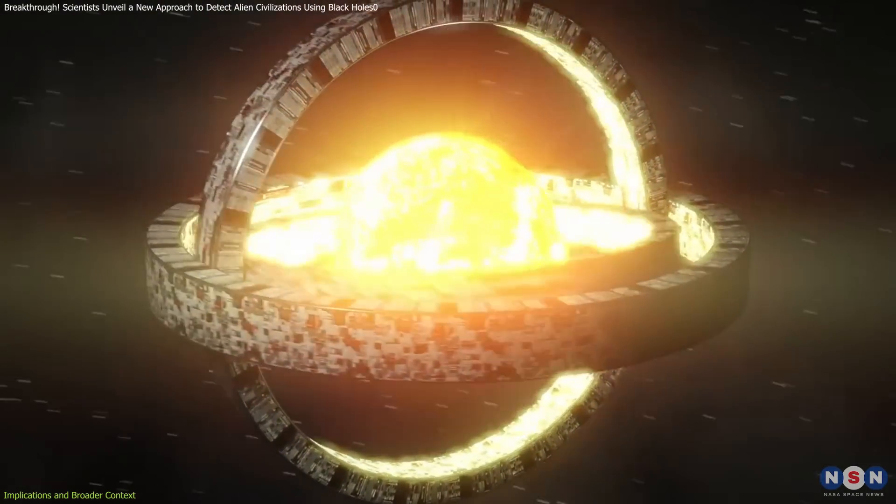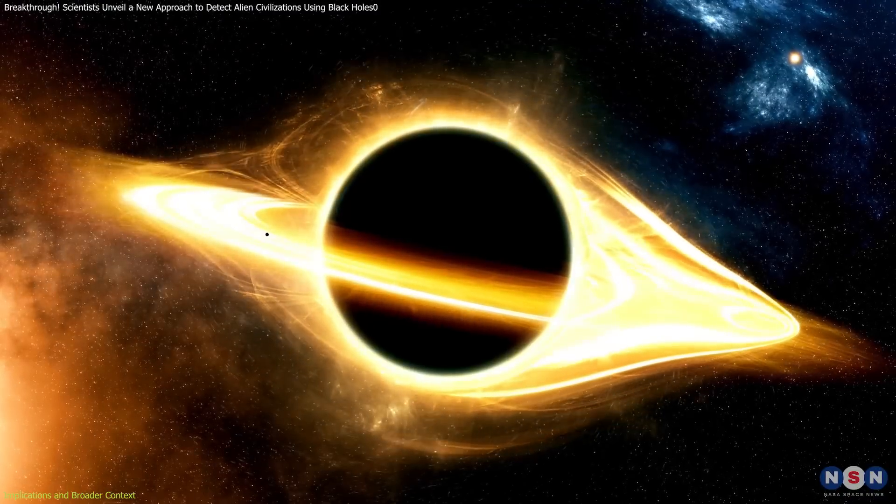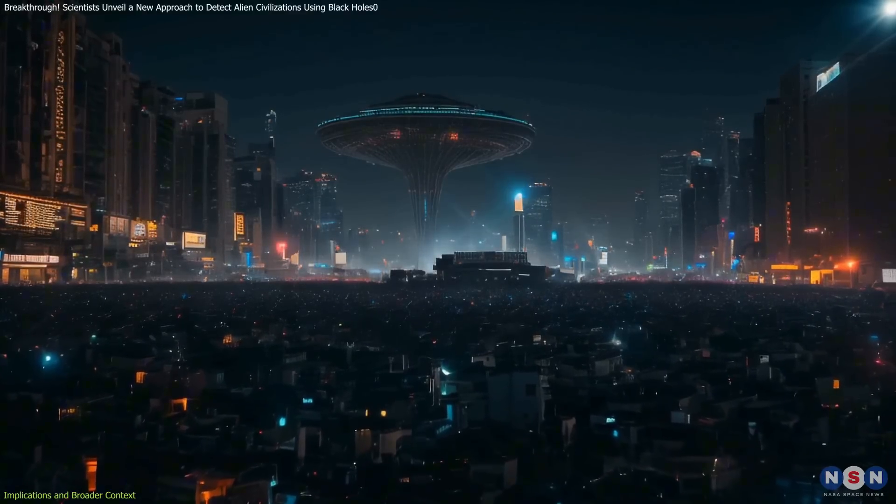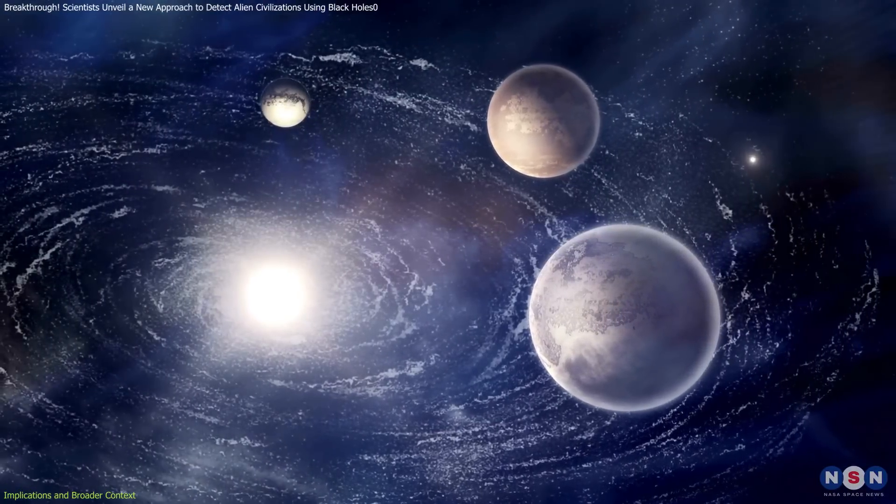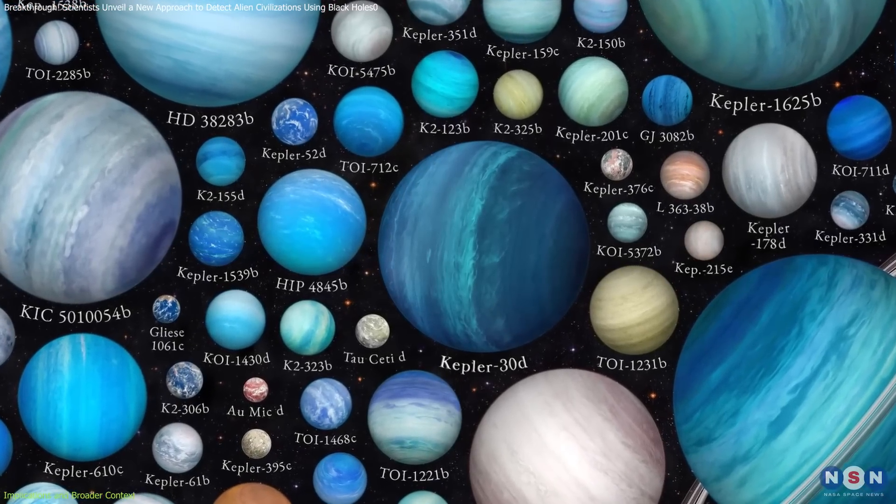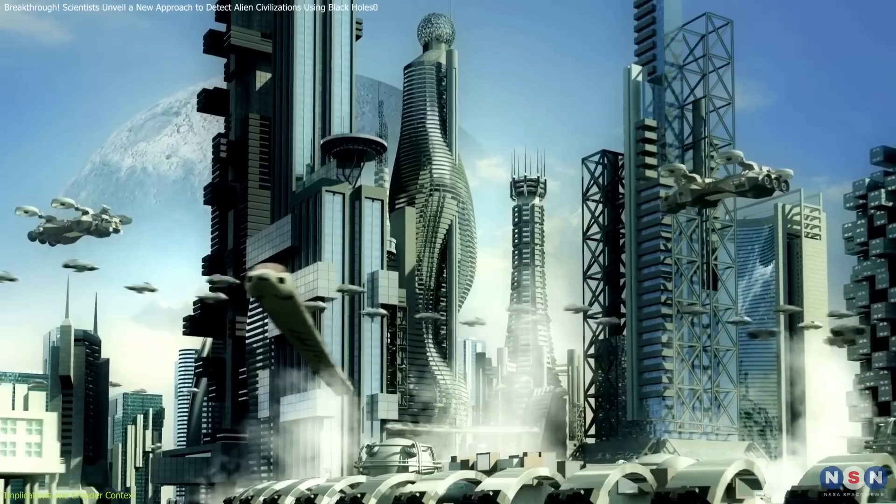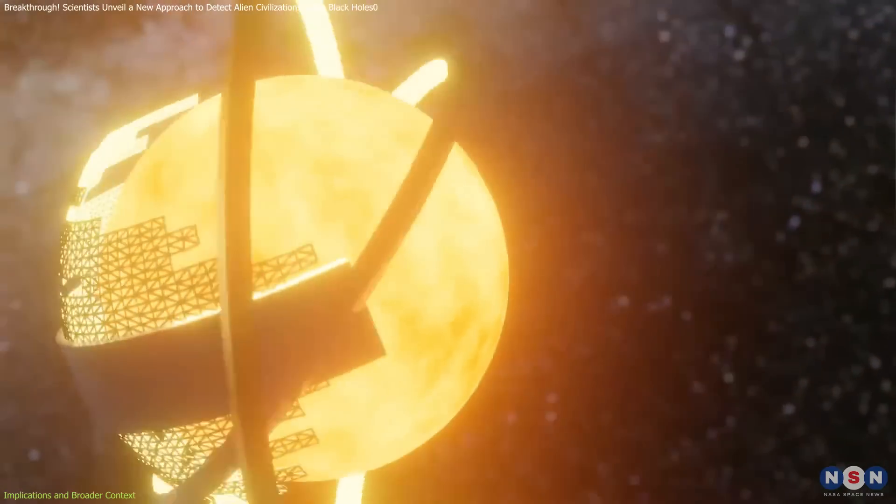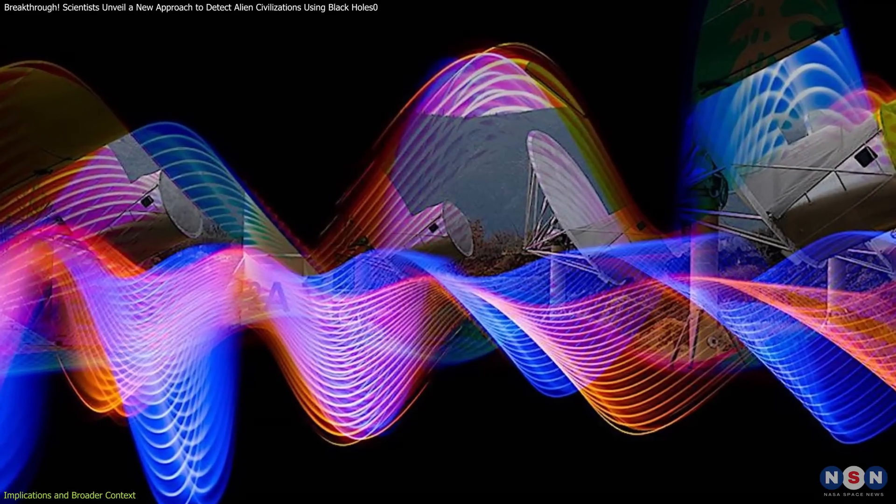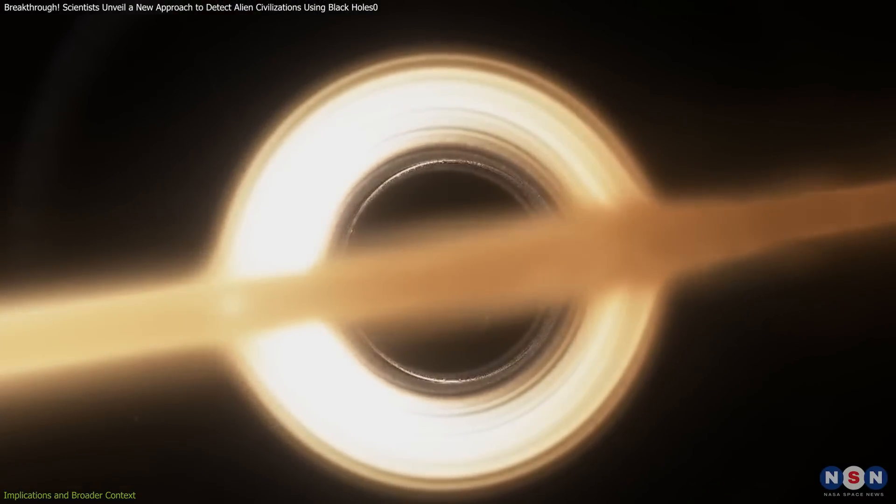Theoretical studies further suggest that primordial black holes, stable and efficient energy sources, are particularly appealing targets for advanced civilizations and astronomers. Furthermore, the success of exoplanetary research bolsters the credibility of searching for alien technosignatures. The discovery of thousands of exoplanets, many in habitable zones, shows that planetary systems are common, reinforcing the idea that intelligent civilizations could evolve and develop technologies capable of harnessing energy on a colossal scale. SETI's growing focus on technosignatures, such as unusual radiation patterns or megastructures, demonstrates a shift towards recognizing that indirect evidence may be our best chance of finding advanced life.